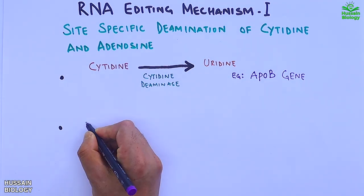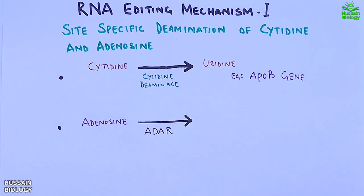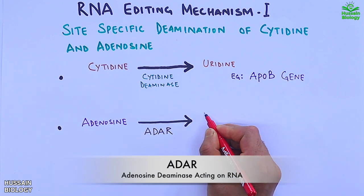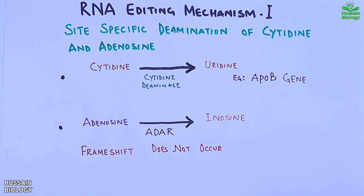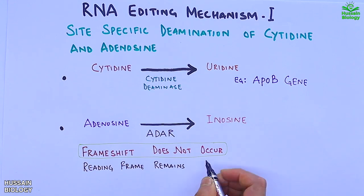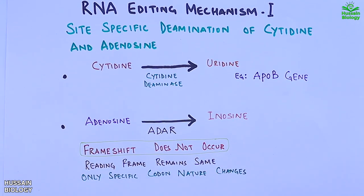The second process is when the adenosine is acted upon by ADAR enzyme and converts this adenosine into inosine. And remember during this kind of RNA editing process the frameshift doesn't occur, the reading frame remains the same and only specific codon nature changes.